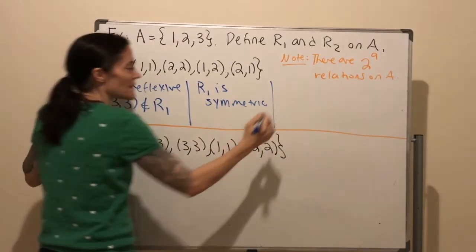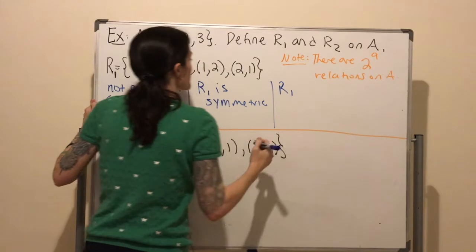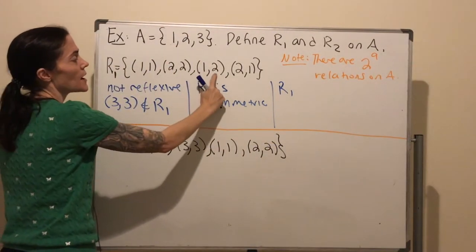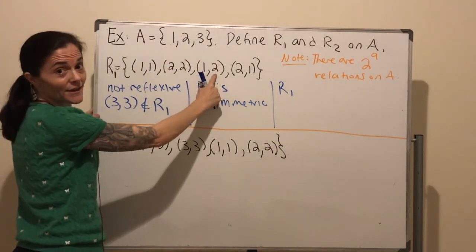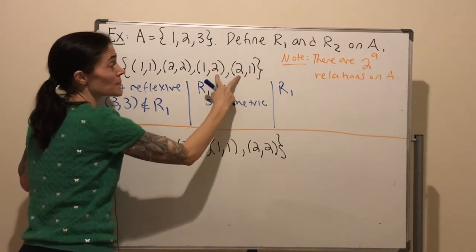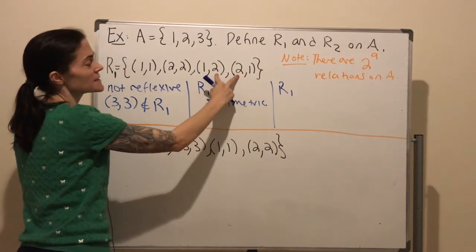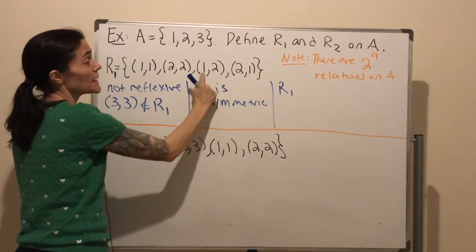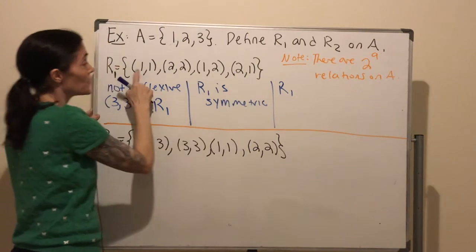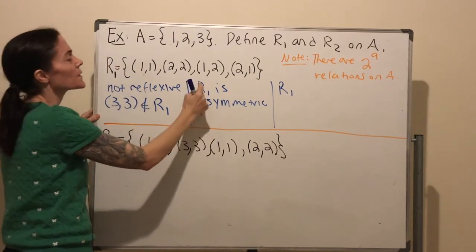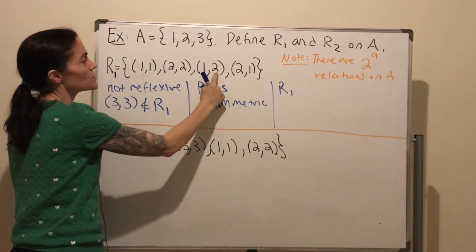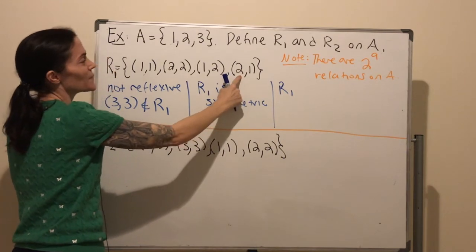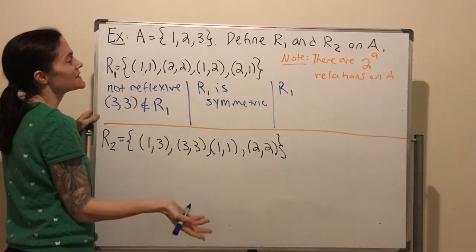The last property was transitive. This says you have a pair in the relation and another one where the middle ones match. So we have (1, 2) and (2, 1) — we would need (1, 1), but we have it. Or we could go (2, 1) and (1, 2) — we would need (2, 2), and we have it.